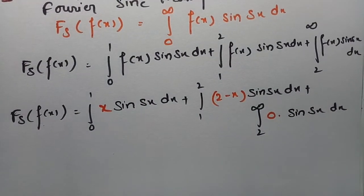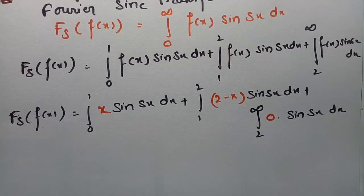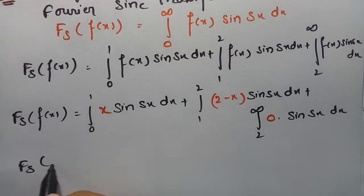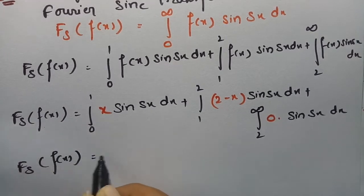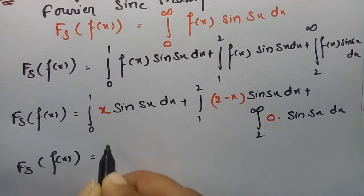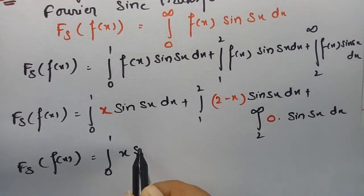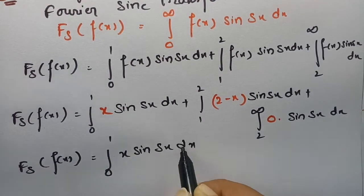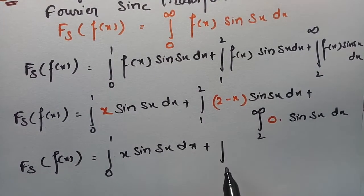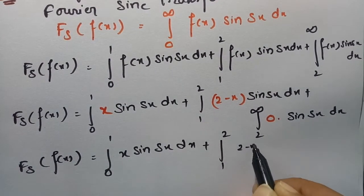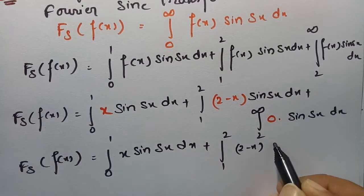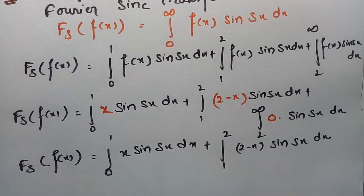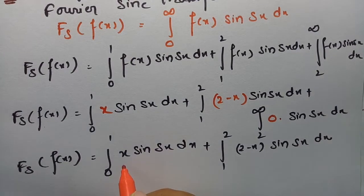So now we have two integrals to solve. The Fourier sine transform of f(x) equals the integral from 0 to 1 of x sin(sx) dx, plus the integral from 1 to 2 of (2 minus x) sin(sx) dx. We will use integration by parts, with u and v identified in each integral.